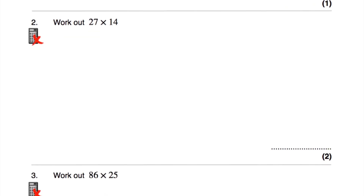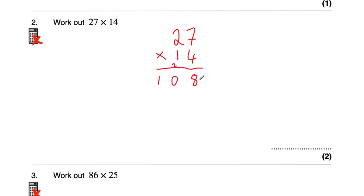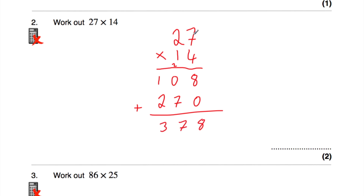Question number two, we've been asked to work out 27 multiplied by 14. We're going to multiply 27 by 4 first, then 27 by 10. 4 times 7 is 28, put our 8 down and carry our 2. 4 times 2 is 8, plus 2 is 10, so 27 multiplied by 4 is 108. Now 27 multiplied by 10 is 270. Adding them together: 8 plus 0 is 8, 0 plus 7 is 7, 1 plus 2 is 3. So 27 multiplied by 14 is 378.